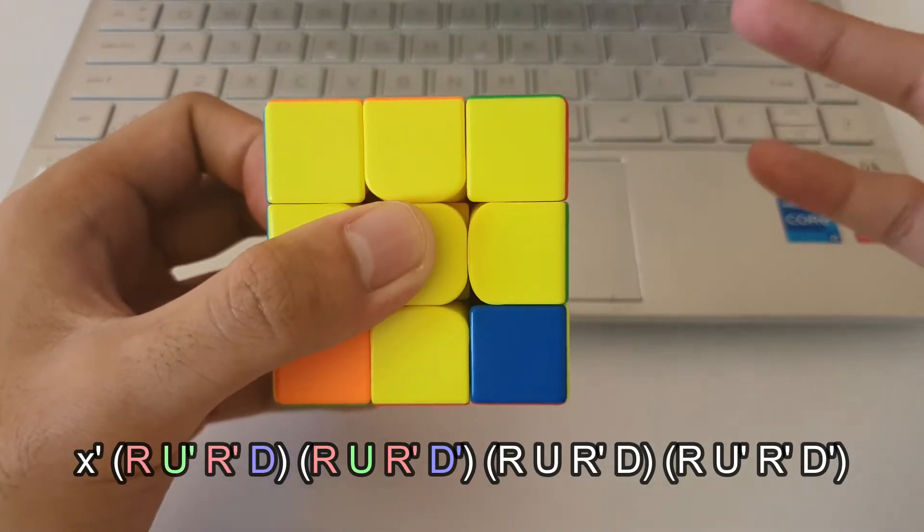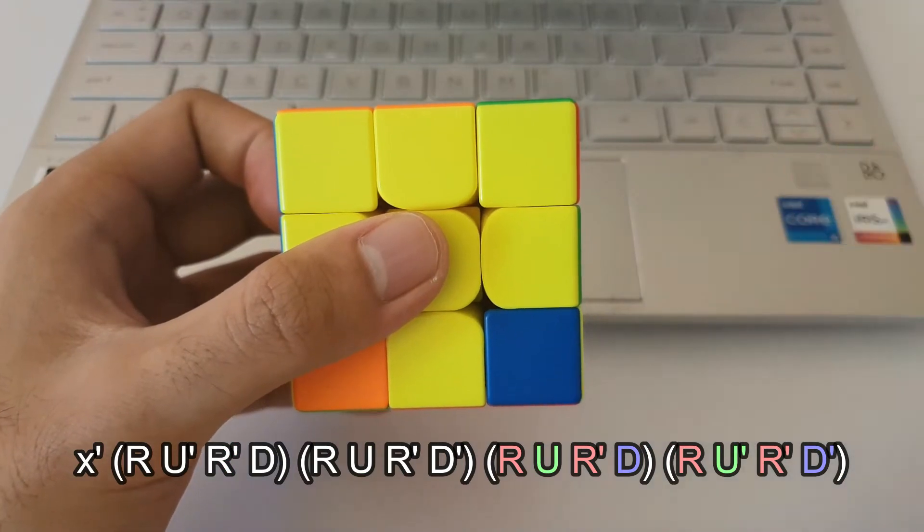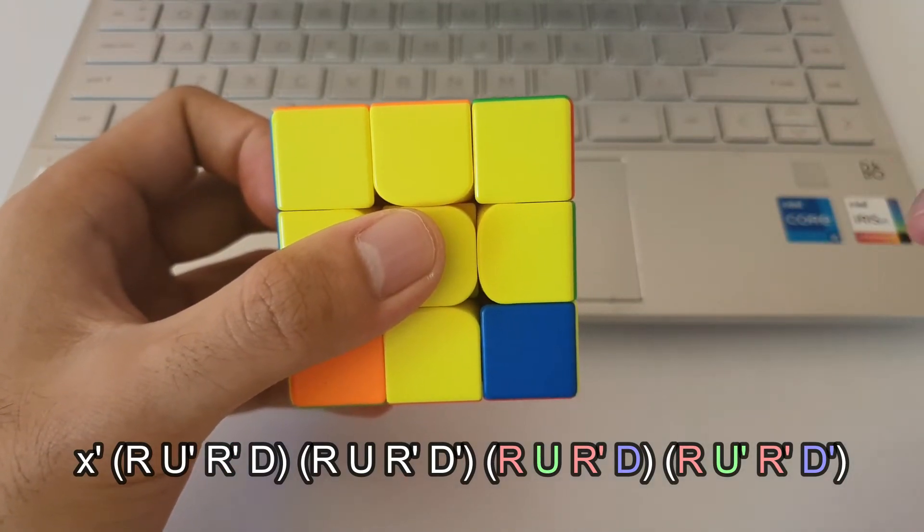Alright, so that's the first half of the algorithm. The second half is similar, but the U and D moves are slightly different in terms of direction.